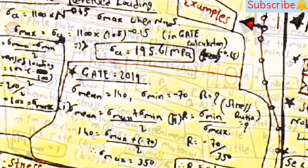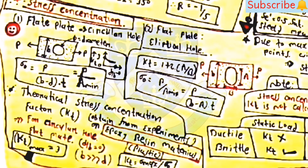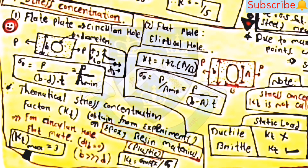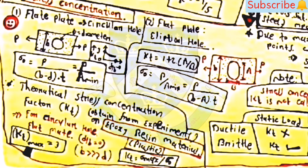For stress concentration in a flat plate with a circular hole, the equation is Sigma_0 = P / ((B - d) × t), which equals P / A_min. For a flat plate with an elliptical hole, K_T equals 1 + 2(a/b), and Sigma_0 = P / A_min = P / ((B - a) × t). The theoretical stress concentration factor K_T for a circular hole in a flat plate equals 3, which is the maximum value.